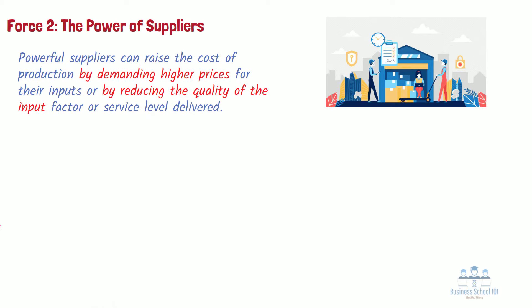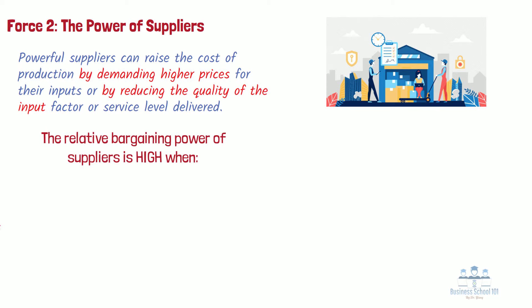To compete effectively, companies generally need a wide variety of inputs into the production process, including raw materials and components, labor, and services. The relative bargaining power of suppliers is high under the following scenarios.